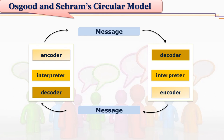This feedback is also a message, and it reaches back to the sender. When this message reaches the original sender, the sender is no more a sender — he or she becomes a receiver. Now decoding of the feedback lies with the original sender, that is the new receiver. After decoding the feedback message, the person again encodes a new message, or responds to the response.